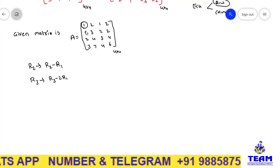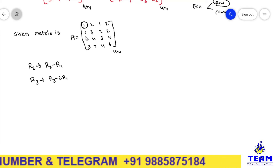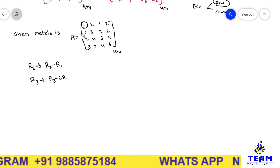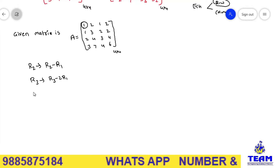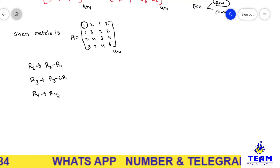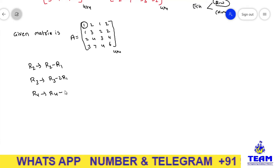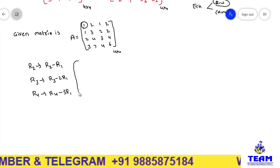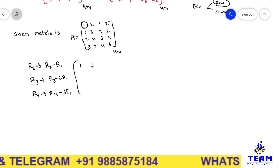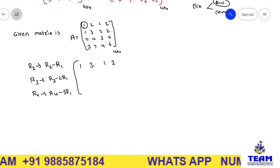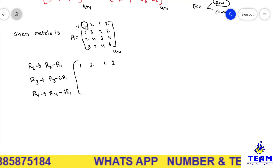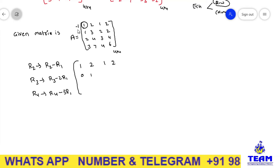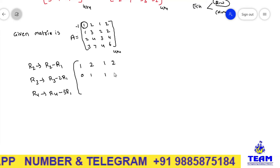Remember it is better to always use the diagonal element only. Applying R2 → R2 − R1: 1 minus 1 is 0. Next, to make 2 zero I apply R3 → R3 − 2R1: 2 minus 2 is 0, 4 minus 4 is 0, 3 minus 2 is 1, 4 minus 4 is 0. Next, R4 → R4 − 3R1.